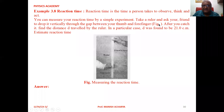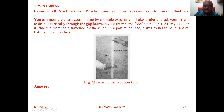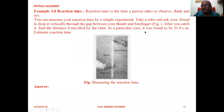Take a ruler and ask your friend to drop it. Take a ruler vertically through the gap between your thumb and forefinger. After you catch it, find the distance d travelled by the ruler. In a particular case, d was found to be 21 cm. Estimate the reaction time for this particular case.